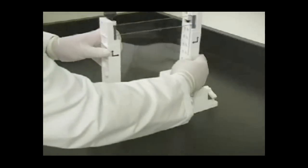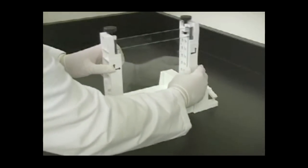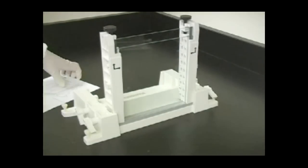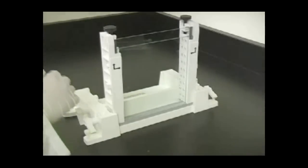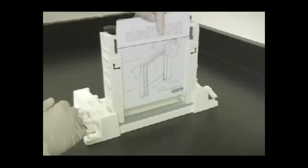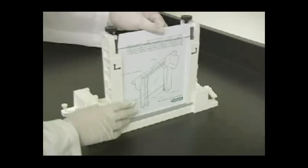Place the assembled gel sandwich in the slot on top of the foam gasket, short plate facing outwards. Insert an alignment card between the two glass plates to push the spacers to the extreme outer edges of the glass plates to ensure maximum gel width. You may need to slide the card from side to side to properly align the spacers.